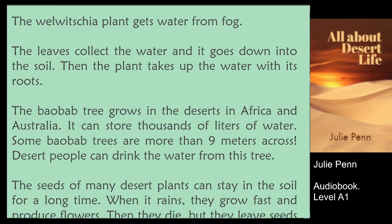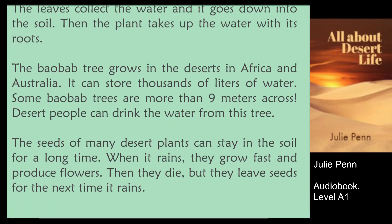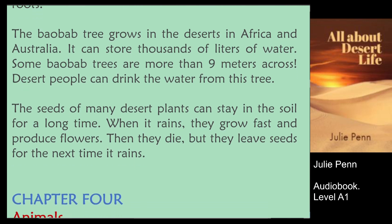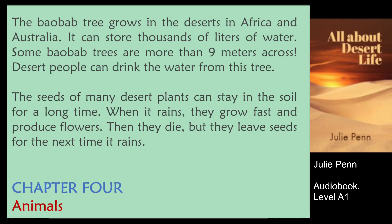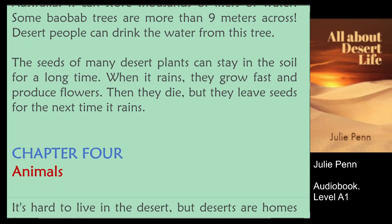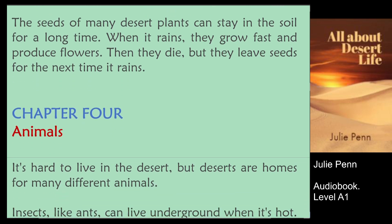The baobab tree grows in the deserts in Africa and Australia. It can store thousands of liters of water. Some baobab trees are more than nine meters across. Desert people can drink the water from this tree. The seeds of many desert plants can stay in the soil for a long time. When it rains, they grow fast and produce flowers. Then they die, but they leave seeds for the next time it rains.